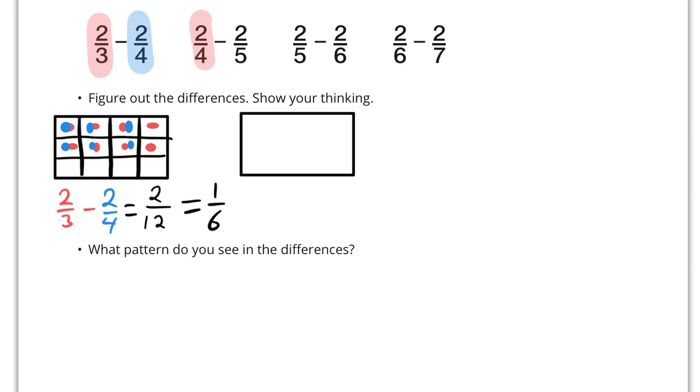Next, we've got 2/4 minus 2/5. And two-fourths is bigger than two-fifths. So, we're going to take this shape and we're going to split it into four along one dimension and five along the other. So, let's split it into four along here. And let's split it into five along here.